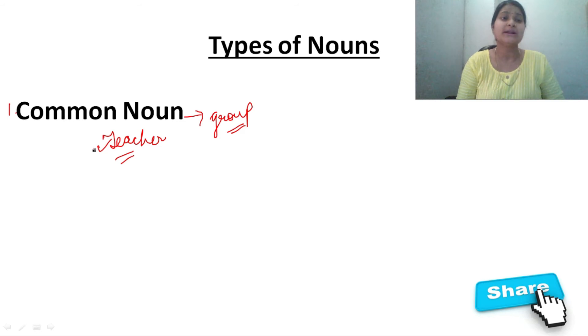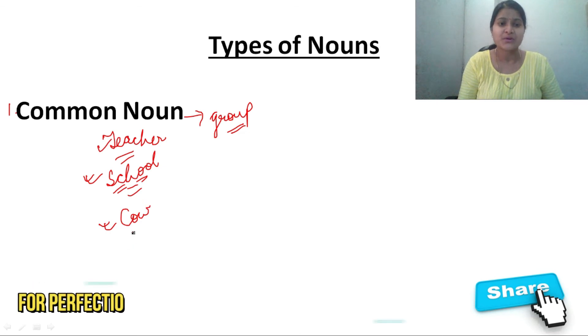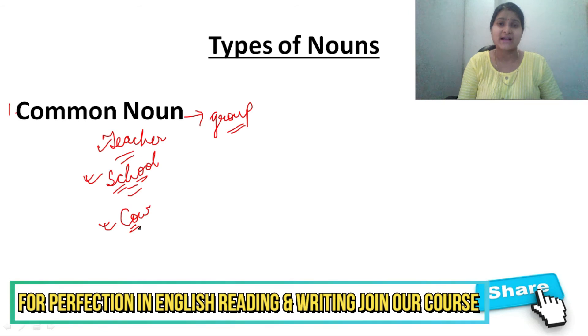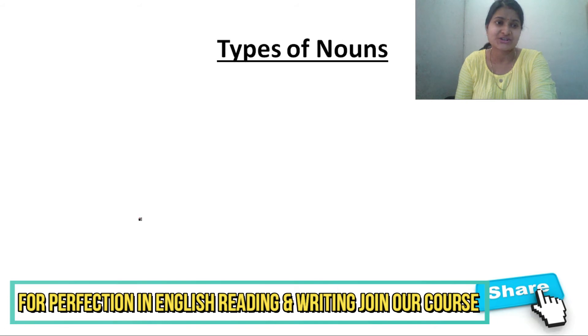When we use the word teacher, it doesn't specify a particular, it's about a group. We call it common noun. When we say school, school means any school, not that the name of your school is not written here. So this school is also a common noun. In the same way, we can say cow, which cow we do not know, which cow, black cow, my cow, his cow. So what is this cow? This cow is also common noun.